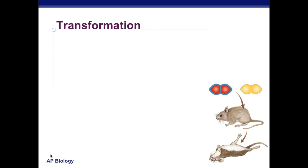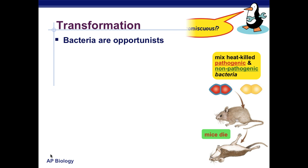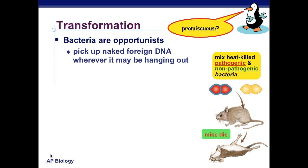They're able to do the sharing of their DNA by a concept called transformation. There's an experiment by scientist Nick Griffith — he looked at bacteria, heat-killed the bacteria, and mixed it with non-pathogenic bacteria. In doing so, the mouse still died. If he had just added the heat-killed bacteria, nothing would have happened. So this showed the idea of transformation: the bacteria is opportunistic, and it'll pick up naked foreign DNA. Even if a bacteria dies, it'll leave behind some of its DNA, and another bacteria present in the area can actually acquire the free-floating DNA.